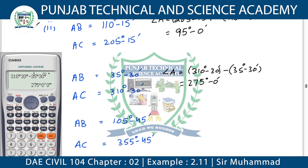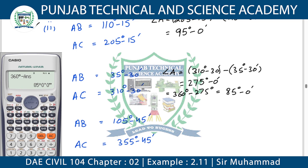Now the angle we got — 270 degrees — this is the exterior angle. We need the interior angle. In this case, the easy method is: when we get the exterior angle, we subtract it from 360 degrees. So 360 degrees minus 270 degrees gives us 85 degrees and 0 minutes — this is our interior angle.